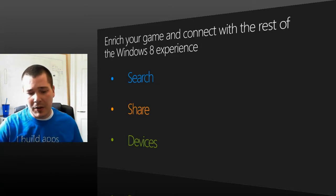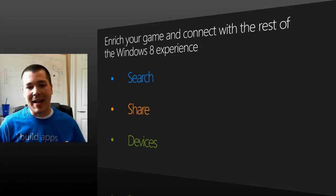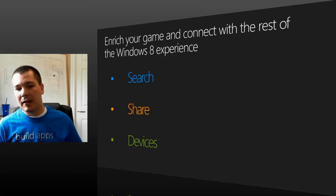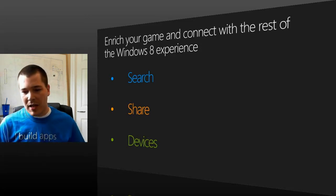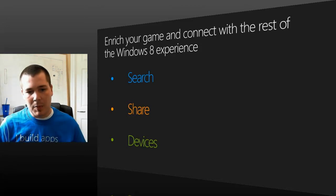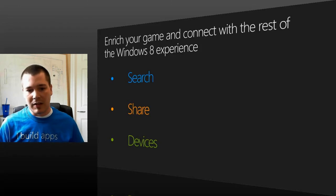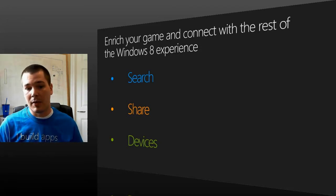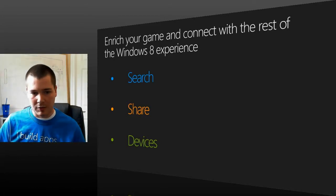Let's talk about the devices charm. That's a really good place to put features like adding gamepads or other peripherals you might have for your game — it allows users to, say, connect a larger screen. There are definitely some key points you can look at to leverage the devices charm. One thing users are going to use the devices charm for is printing — a lot of users are going to go there to print out their high score table or something along those lines, so it's a good idea to include some functionality with that as well.